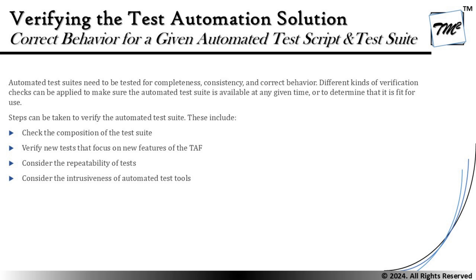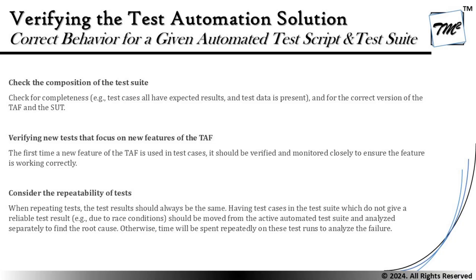Steps that can be taken to verify the automated suites include the following: check the composition of the test suite, verify new tests that focus on new features of the TAF, consider the repeatability of the tests, and consider the intrusiveness of the automated test tools. We'll be discussing each of these four pointers in more detail.